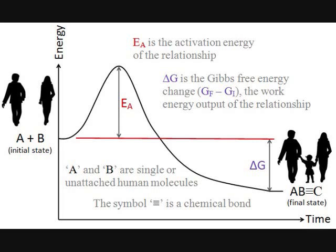The following diagram shows the basics of the thermodynamics of reproduction, the central process of human existence. The graph, called the reaction coordinate, plots the Gibbs free energy — otherwise known as available energy — of the human chemical reaction, plotted against time in years, otherwise known as the extent of the reaction. The start of the reaction is what is called the initial state, which shows two unattached reactants, or single humans, at their instance of first meeting.